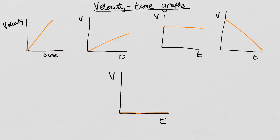So in the last video we looked at distance-time graphs. In this video we're going to look at velocity-time graphs, which is a different kind of motion graph that shows how the velocity of an object evolves over time. We'll do the same thing as we did in the last video — first look at what we can tell by just looking at the shape of the graphs, and then we'll make some calculations as well.